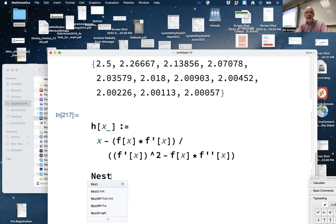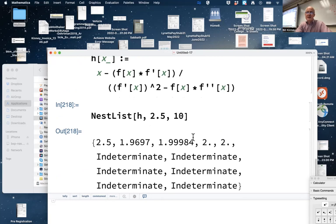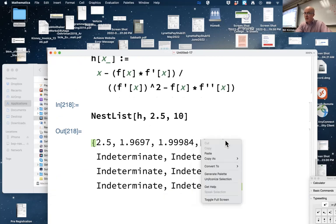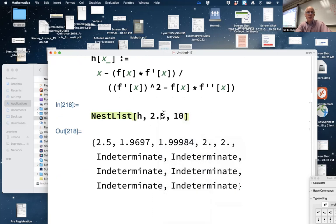Now apply Newton's method, the modified Newton's method, by iterating h, trying to estimate the root at two with a seed of 2.5, say. We're getting indeterminate, must be dividing by zero, but it does seem to be converging to two rapidly at first. I don't know if we pick a different seed if it'll work better.